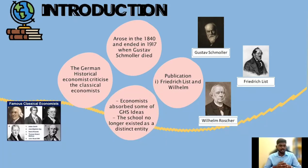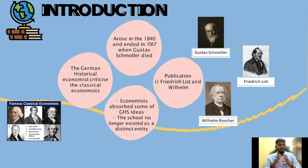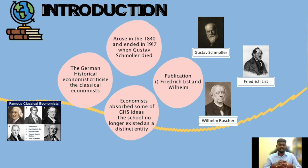We start with an introduction. The German Historical School, which arose in the 1840s with the publication of Friedrich List and Wilhelm Röscher, ended in 1917 when Gustav Schmoller died. By then, economists in general had absorbed some of the ideas of the school and it no longer existed as a distinct entity. Like the socialists, the German historical economists were generally critical of classical economics.